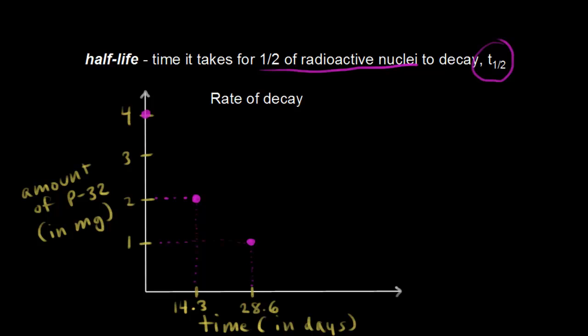Let's wait another half-life. So 28.6 plus 14.3 should be 42.9. That's our next point.